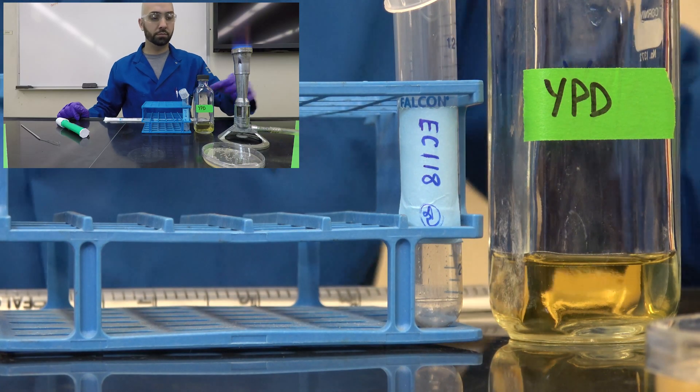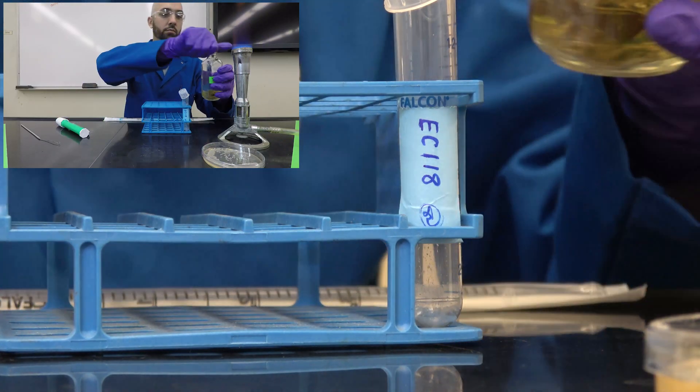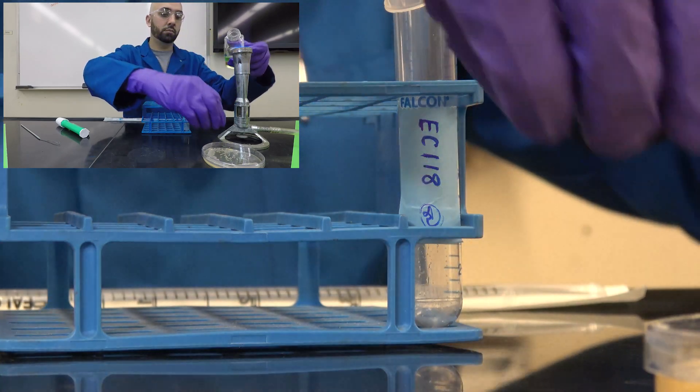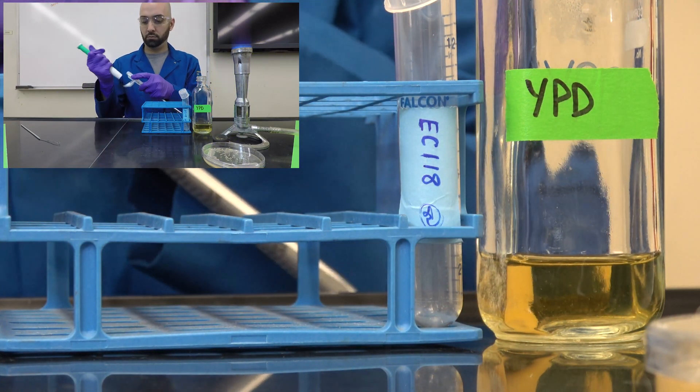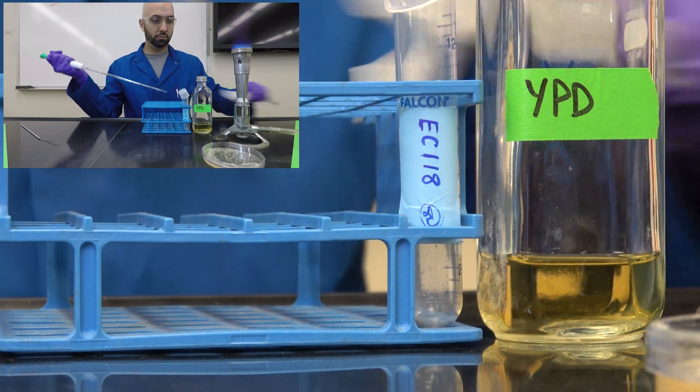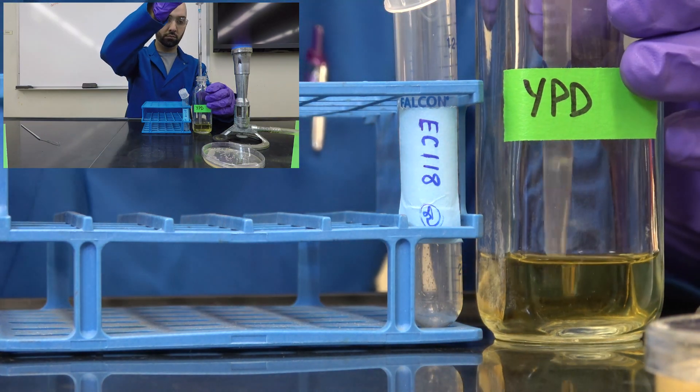I'll start by flaming the lid and mouth of the bottle, then add three milliliters of yeast media to a culture tube. The protocol for this overnight yeast culture will be similar to our bacterial small volume culture that we started in a previous video.